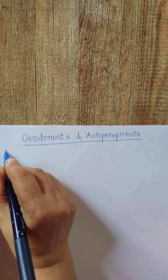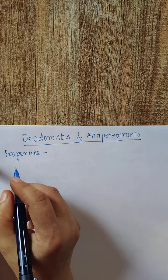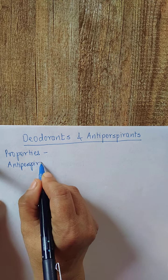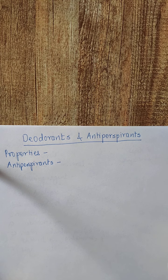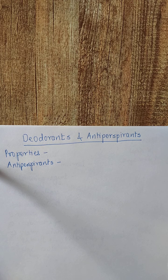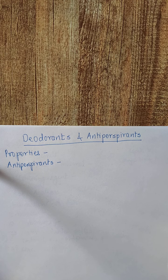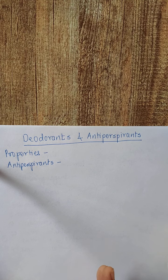Now we will discuss the properties of antiperspirants and deodorants. Antiperspirants contain astringents in the product which reduce sweat secretion. Their action depends on the coagulation effect on skin proteins. Most antiperspirants also act as deodorants — meaning they generally have both antiperspirant and deodorant action. However, they may sometimes cause skin irritation.